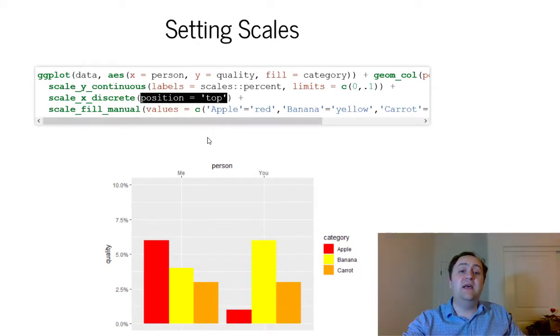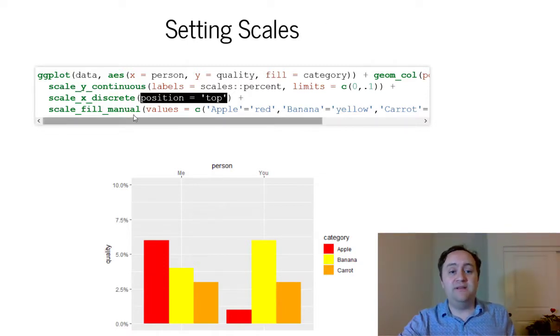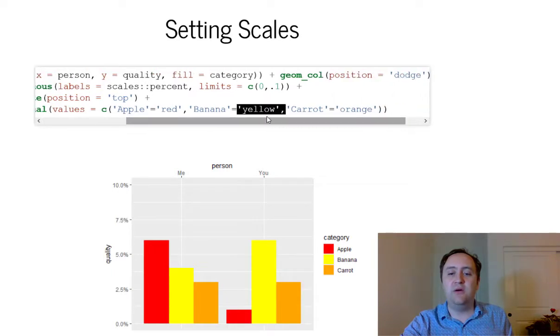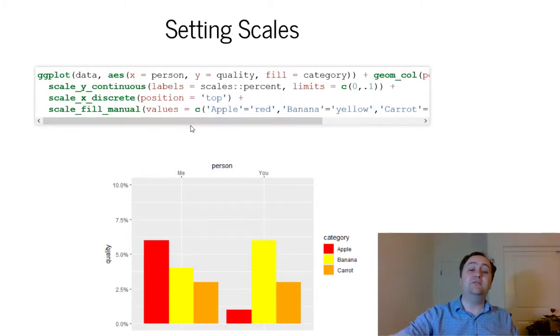Now the fill values, I want to pick some specific colors for the apple, banana, and carrot that I have. I said that fill equals category. So it's picking a different color for each category, but I want to tell it what color to pick for each category. So I'm going to use values. Usually when you're using a manual scale, you want to set the values to tell it which things map onto which other things. And I want to say, hey, the apple category, that's going to become red. The banana category, that's going to become yellow. The carrot category, that's going to become orange. So you can set the values manually in this way. And that's what we've done. So we get a red apple, a yellow banana, and an orange carrot. We get our percentages up here on the left-hand side. We've moved our x-axis to the top. There we go.